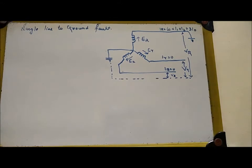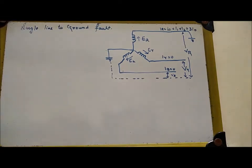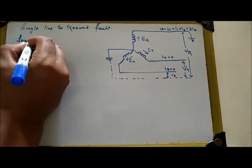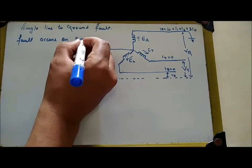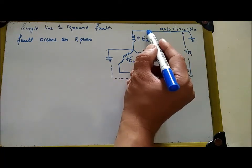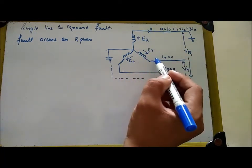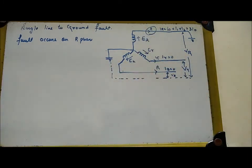The first unsymmetrical fault type is the single line to ground fault. We will discuss the single line to ground fault where the fault occurs between R-phase and the ground. The fault occurs on R-phase to ground. From the diagram, R-phase, Y-phase, and B-phase are shown, and the fault occurs on R-phase to the ground.